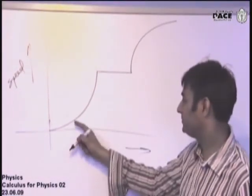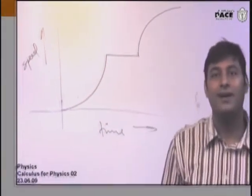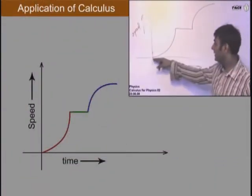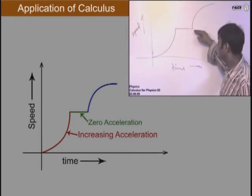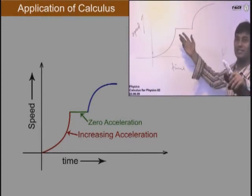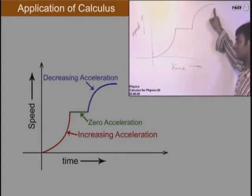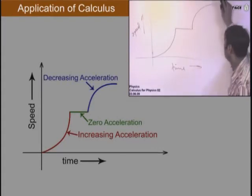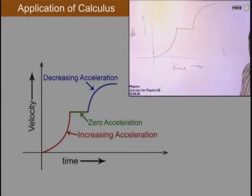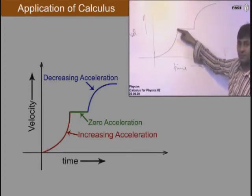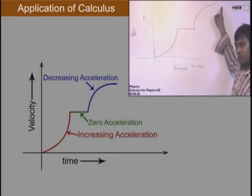From one to two on the velocity-time graph: it is constant acceleration. From two onward: increasing acceleration. Constant acceleration means the slope is linear and constant. Increasing acceleration means the slope itself is increasing.